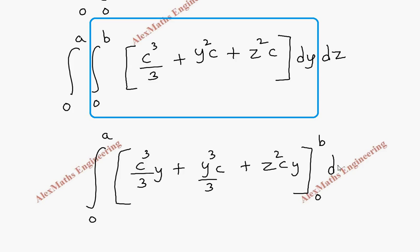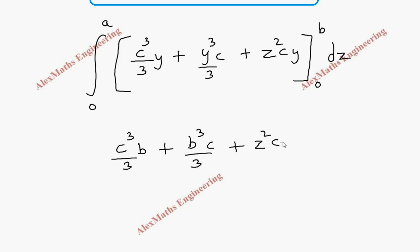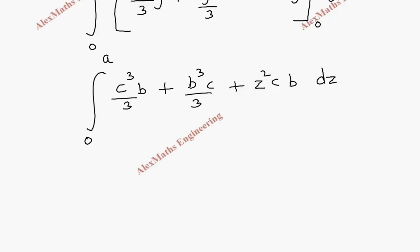We still have integral 0 to a with respect to dz. Wherever y appears we apply the limit, so it becomes: c cube by 3 times b, plus b cube by 3 times c, plus z square times c times b. Then we have integral 0 to a dz. Now we are going to integrate this with respect to z.